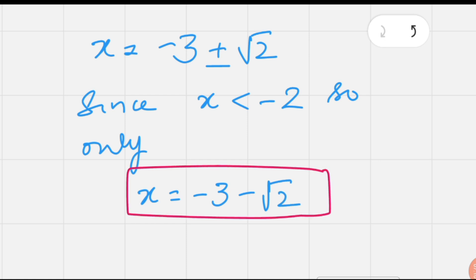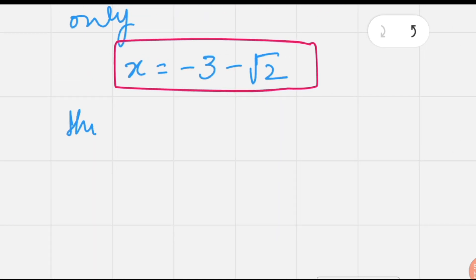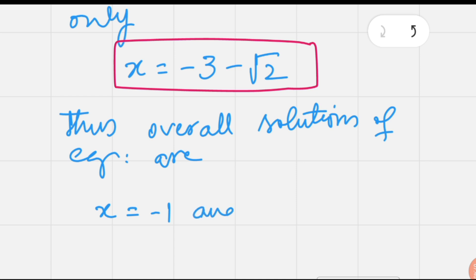On the basis of Case 1 and Case 2, we have only two solutions. The overall solution of the equation: x = -1 from Case 1, and x = -3 - √2 from Case 2.